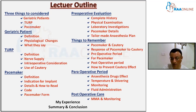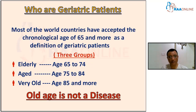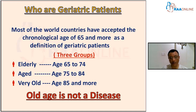Now, who are the geriatric patients? Most countries in the world have accepted the chronological age of 65 and above as the definition of a geriatric patient. Within this group they are divided into three subgroups: elderly, aged, and very old. Elderly is 65 to 74 years, aged is 75 to 84 years, and old is 85 years and above.